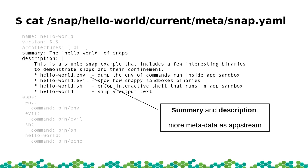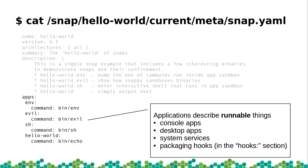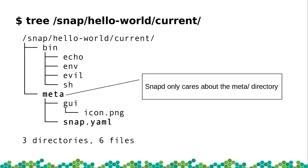You can have multiple things in a single snap — a MySQL snap could have a daemon and CLI tools. You can have services, desktop apps, CLI tools, and hooks — kind of like package installation hooks in traditional packages. All of them are listed in the snap yaml, and all of them are confined. There's no way to break out of the sandbox — you can't install a snap where the configure script adds an extra repository to your system.